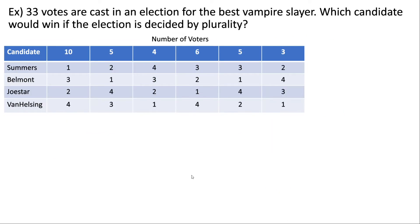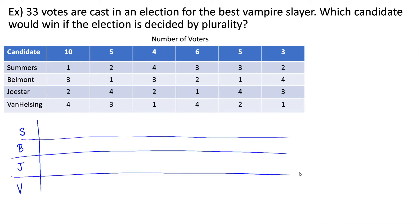Let's see another example. We're told there are 33 votes cast in an election and we're given a preference ranking table to decide using plurality. This is a bit more complex because there are more groups of voters and more candidates, but we solve it the same way. To keep track, I'll write out initials for each candidate. In the first column, 10 voters ranked Summers first, so those 10 voters will be voting for her.